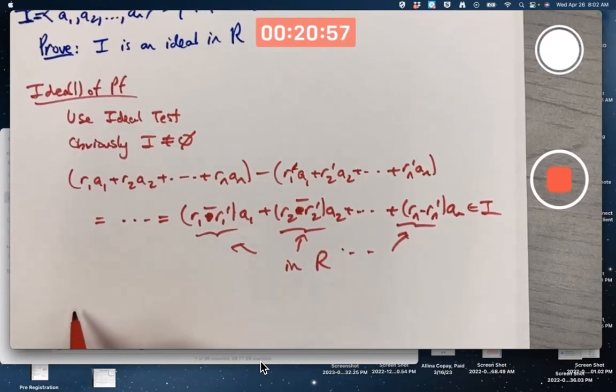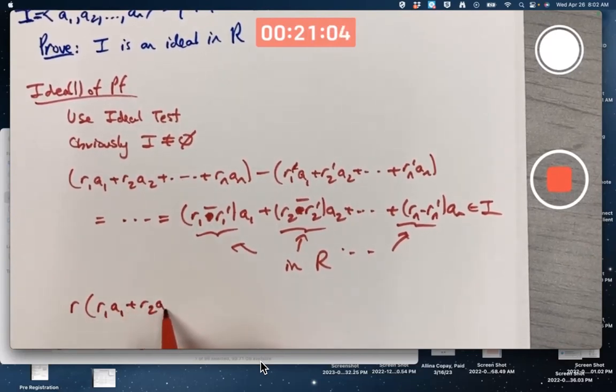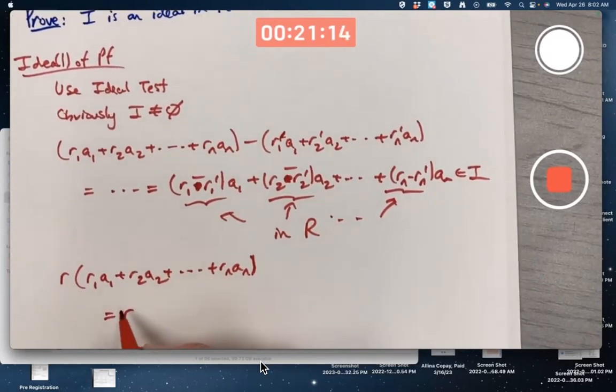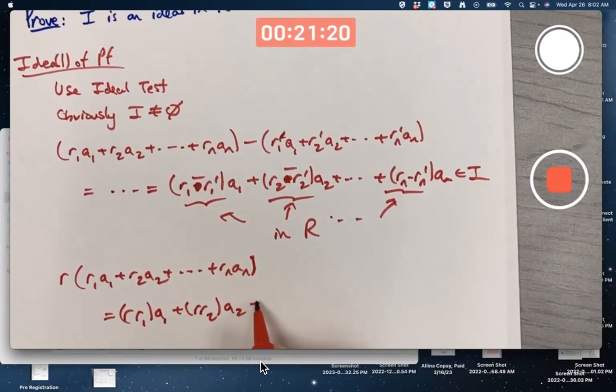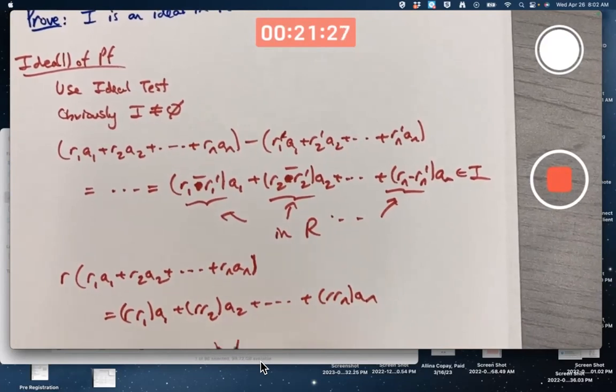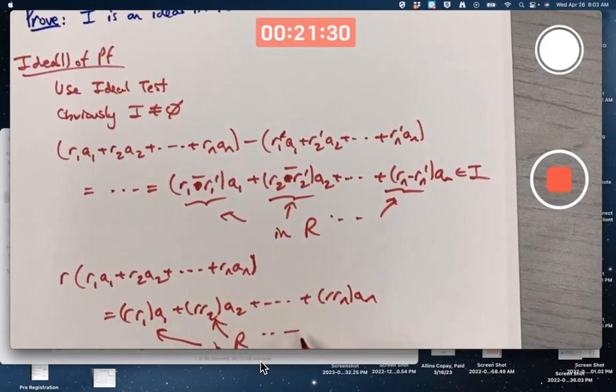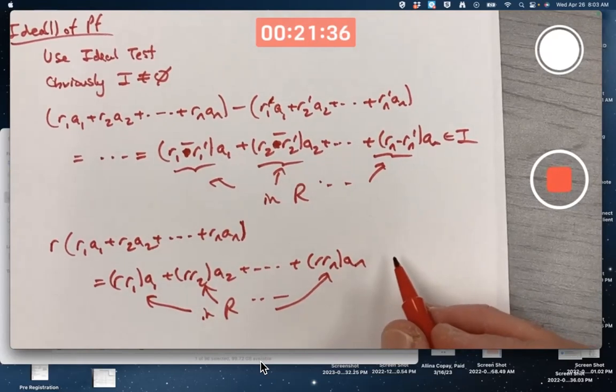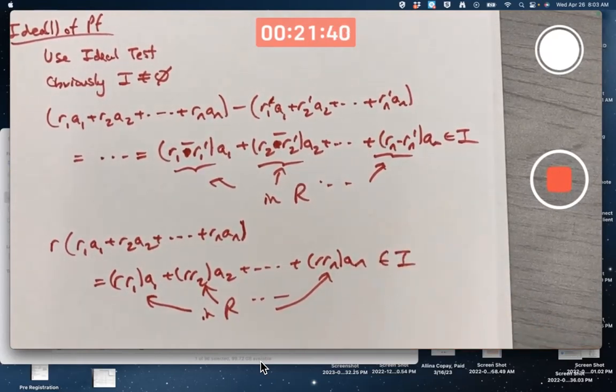Superclosure under multiplication. Give me an arbitrary element R of the ring and multiply it times an arbitrary element of I. Use the distributive property and the associative property, maybe for extra emphasis. And once again, because of closure in R, each of these things is in R. Therefore, you have a linear combination, so to speak, of the elements A1 through An. This, by definition, is in I as well. There we verified superclosure. That does it.